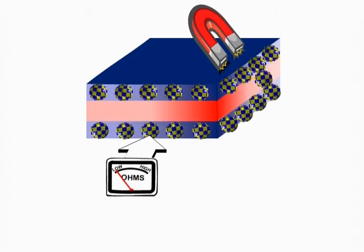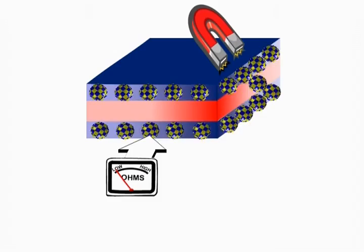Then when a field is applied, spins in the free layer switch, conduction electrons scatter less and resistance drops.